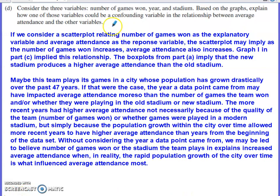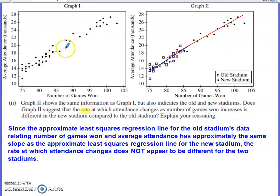The last part asks us to consider three variables — number of games won, year, and stadium — and explain how one of those could be a confounding variable in the relationship between average attendance and the others. A confounding variable is one that you're not necessarily measuring in the analysis you're doing. If we consider the scatter plot relating number of games won as the explanatory variable and average attendance as the response variable, the scatter plot implies that as games won increases, average attendance also increases.